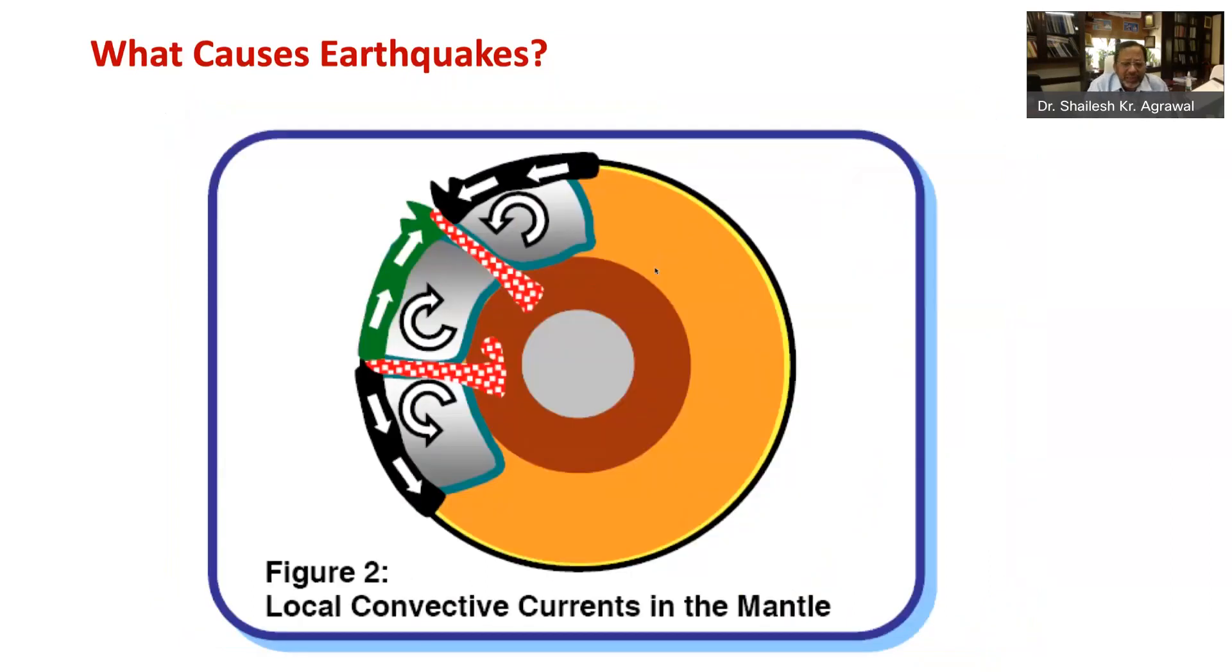Because of this high temperature and pressure difference between core and crust, convection currents develop in the mantle, which is in liquid form. Remember, boiling of water in a kettle happens due to convective flow.